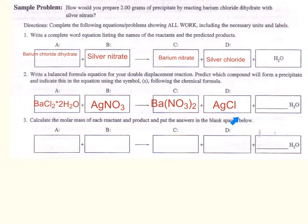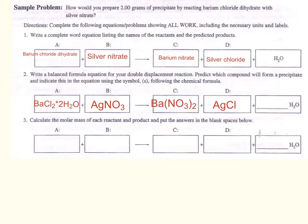Now we need to look at our equation and balance it. We'll notice that our bariums are balanced, our chlorines are not balanced, our water is not balanced, silver is balanced, and our nitrates are not balanced. So we will now pause and balance the equation. We now have a balanced chemical equation.